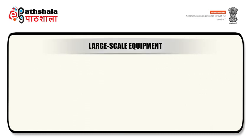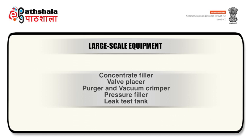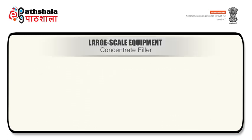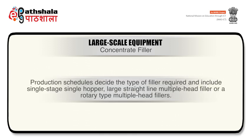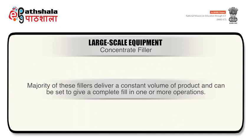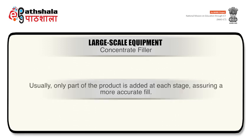Now we will discuss the large scale equipment used for the manufacturing of pharmaceutical aerosols. The large scale equipment comprises of concentrate filler, valve placer, purger and vacuum crimper, pressure filler, and leak test tank. Production schedules decide the type of filler required and include single stage single hopper, large straight line multiple head filler, or a rotary type multiple head filler. The majority of these fillers deliver a constant volume of product and can be set to give a complete fill in one or more operations. Generally only part of the product is added at each stage, assuring a more accurate fill.